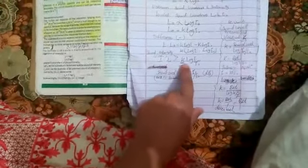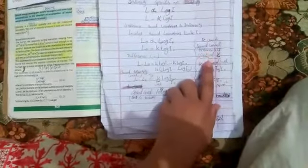We call L minus L0 the sound intensity level. Now K is the proportionality constant, and we need to find its unit. To find K, we rearrange so that K equals the sound intensity level divided by log (I/I0), which gives us the unit of K.